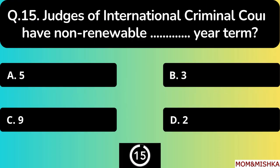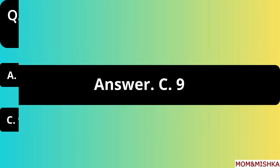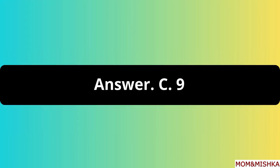Judges of the International Criminal Court have a non-renewable blank-year term. It's a 9-year term — option C.